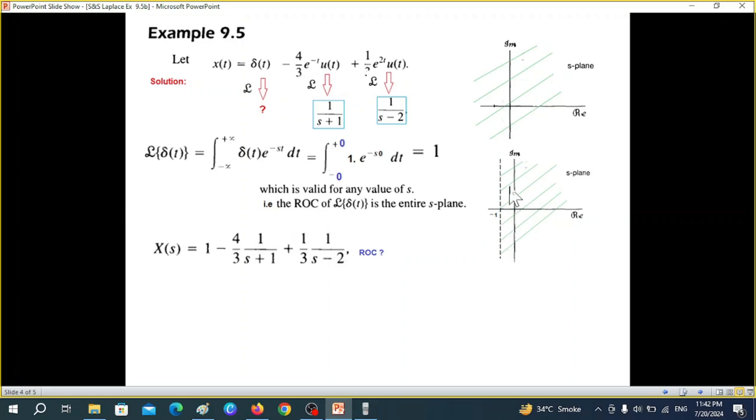So this is minus one point, ROC is greater than minus one. And similarly in this case ROC will be greater than plus two. This is plus two and ROC is greater than plus two.